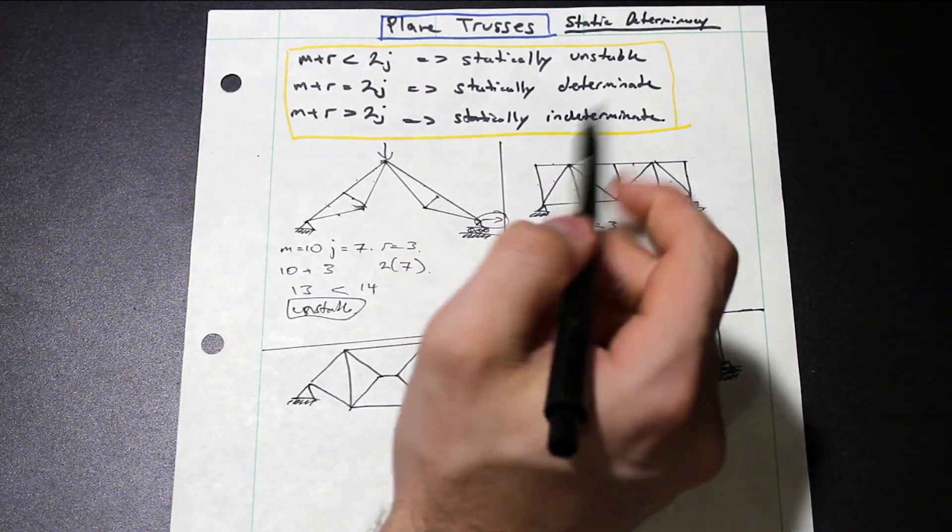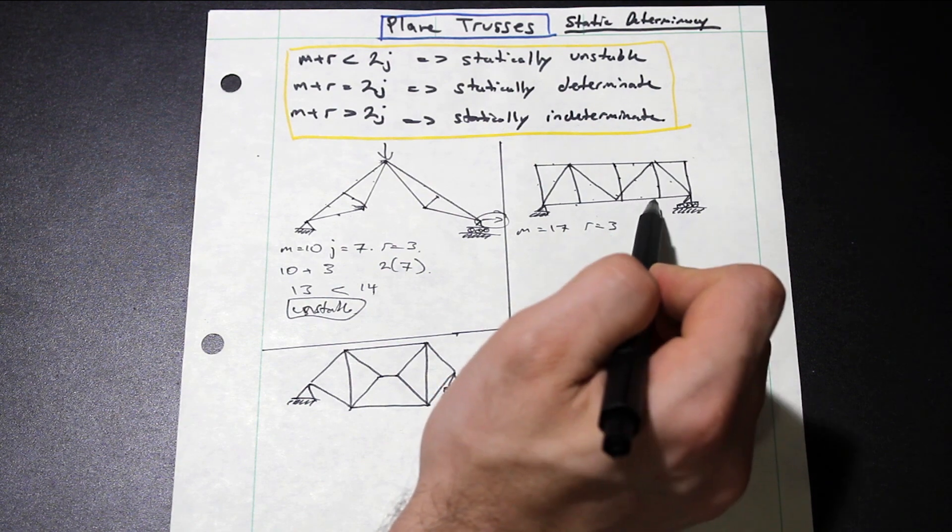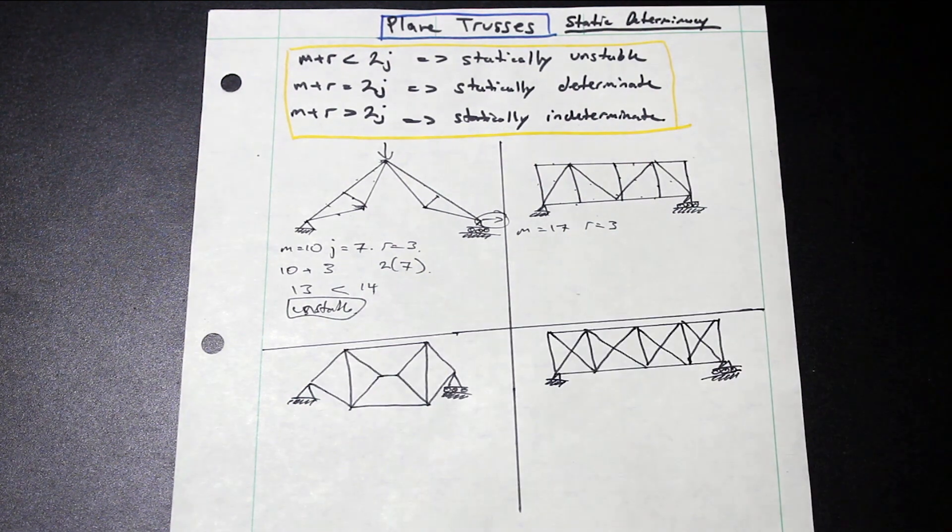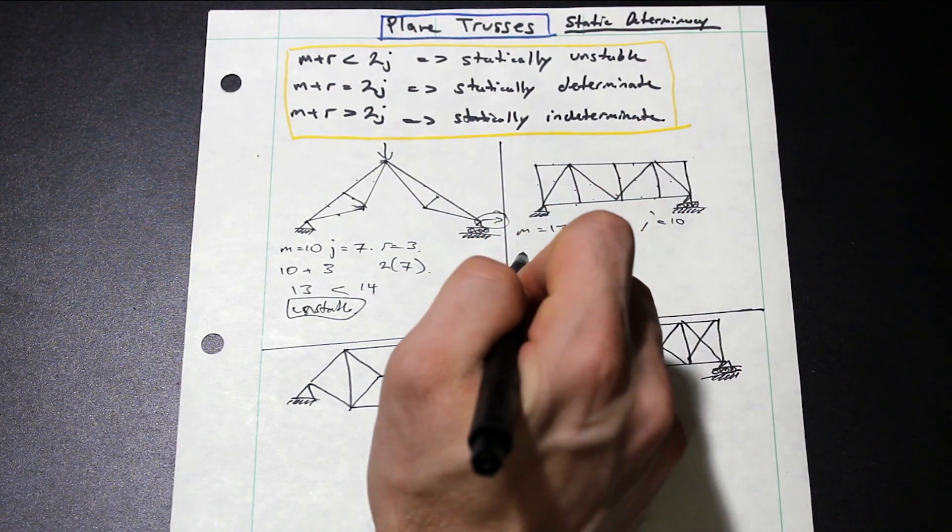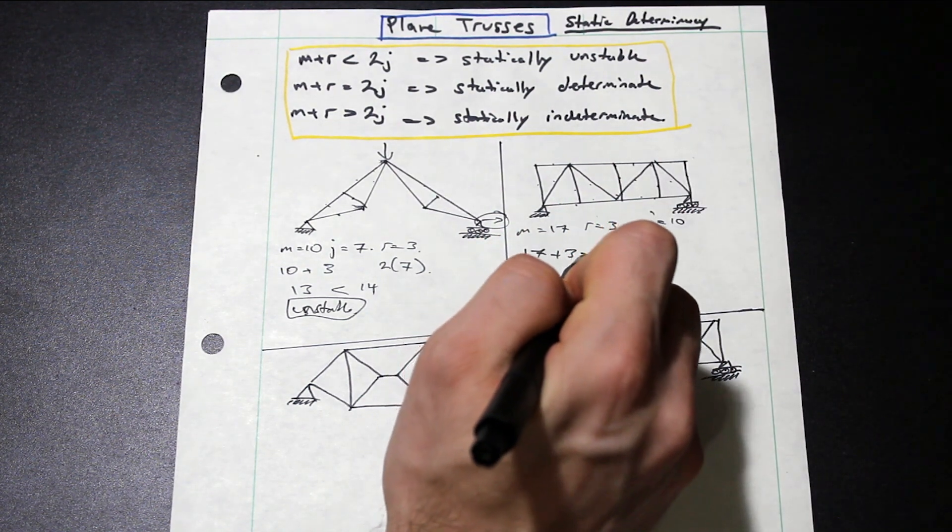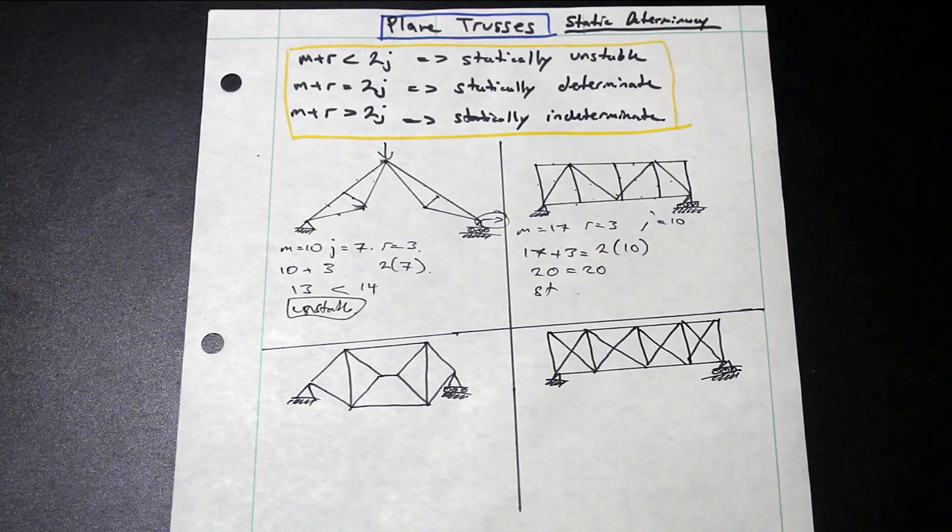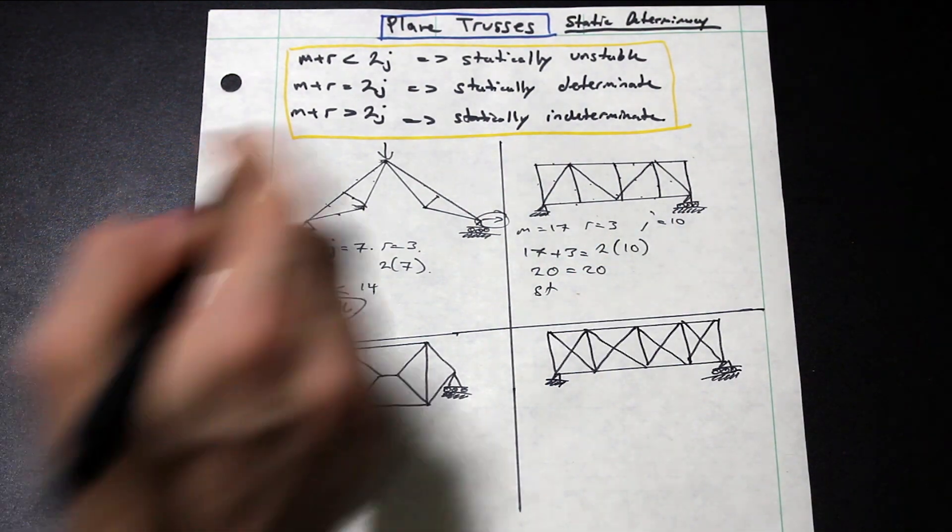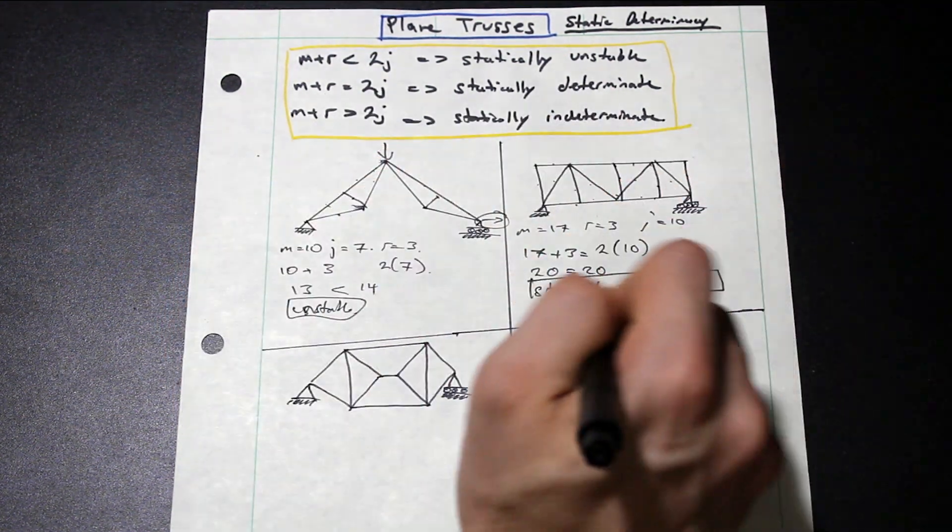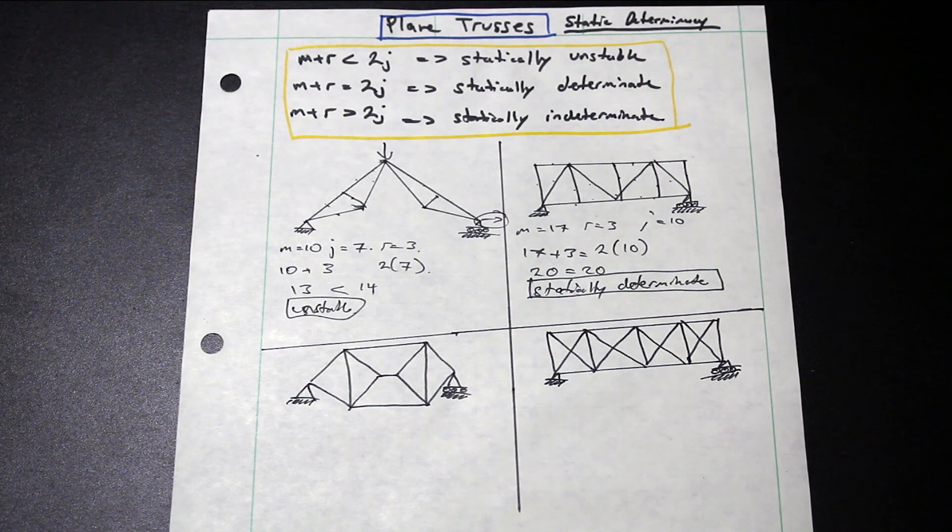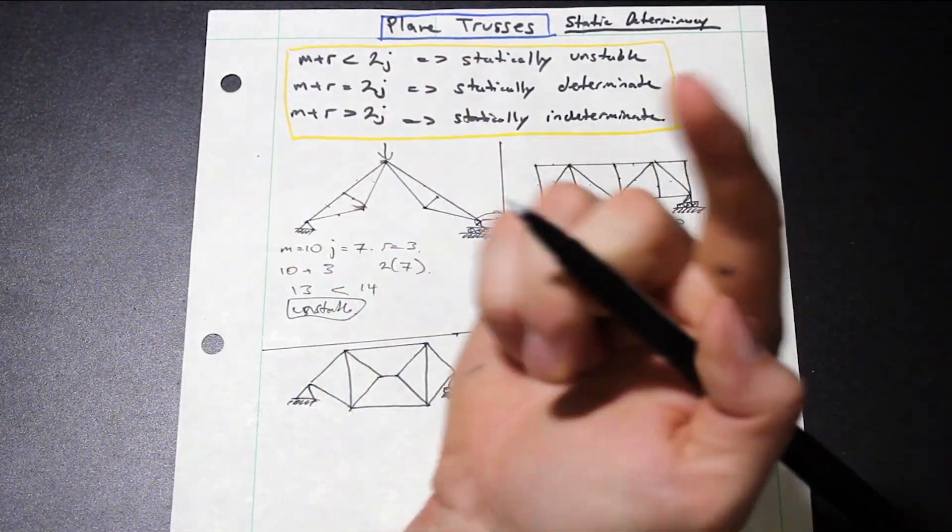What about J? How many joints do we have? So 1, 2, 3, 4, 5, 6, 7, 8, 9, 10. So we have 10 joints. And let's go ahead and fill out the left side. We have 17 plus 3 equals 2J. These are equals. So we have what we call a statically determinate truss. So the number of equilibrium equations we can generate from this truss is equal to the number of unknowns. So we can arrive at a single solution.